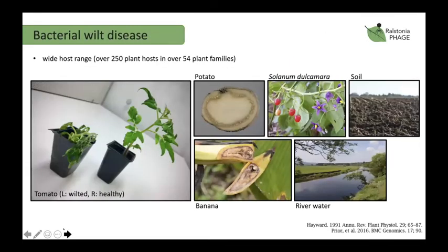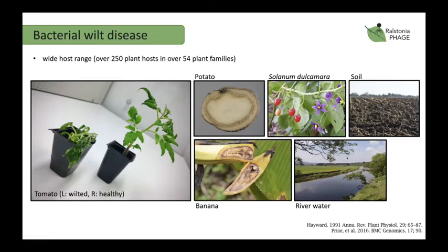It's the causative agent of bacterial wilt disease and it has a wide host range, infecting over 250 plant hosts in over 54 plant families. It infects solanaceous plants such as tomato and potato, but can also infect fruit crops such as banana and oilseed crops, and secondary asymptomatic hosts such as Solanum dulcamara, or woody nightshade. It can persist for long periods in the soil and in more temperate regions can also persist for long times in river water.